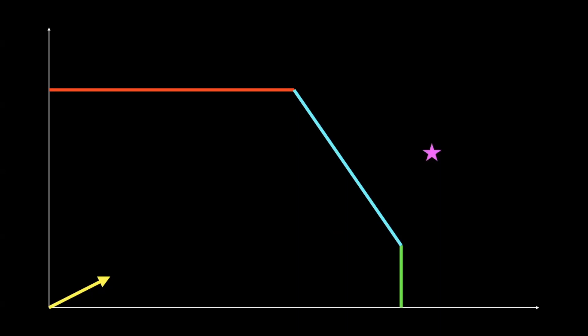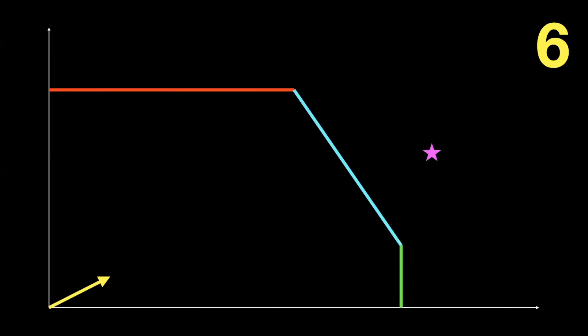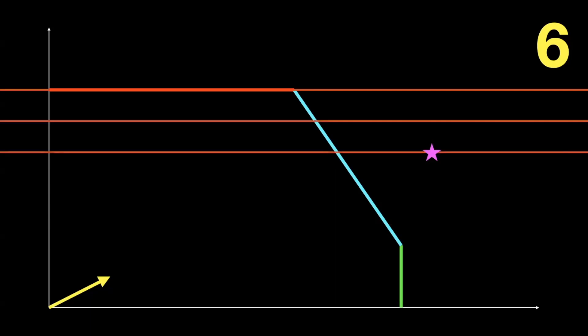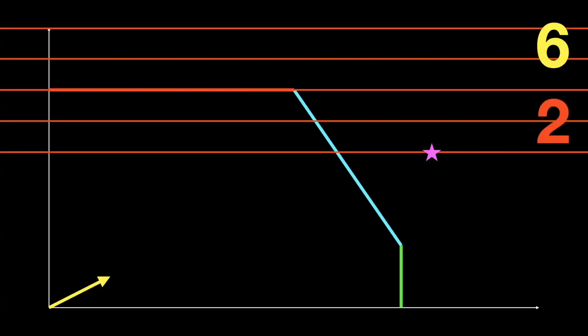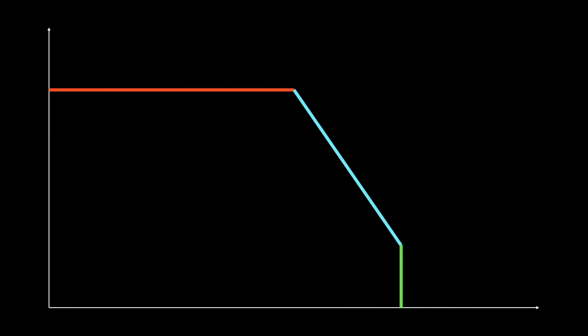Lagrange's idea: let yourself choose a point anywhere on the plane, ignoring the constraints. But if you choose a point outside the walls, you lose the game. We set up a scoring system — points along the red wall get a red score of zero, one step inside gets a score of one, outside gets negative scores. So the magenta star gets a red score of two, a blue score of negative two, and a green score of negative one.